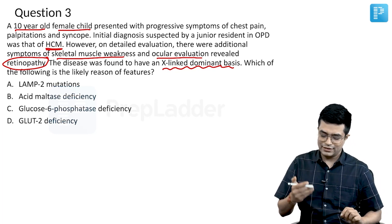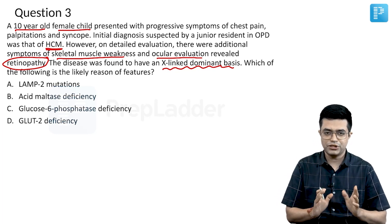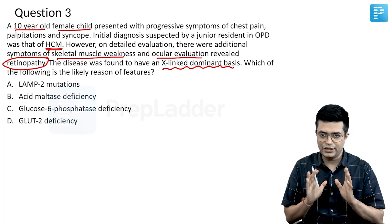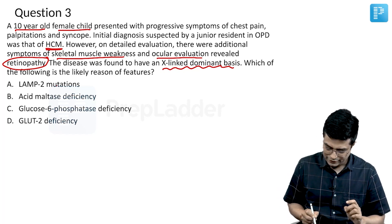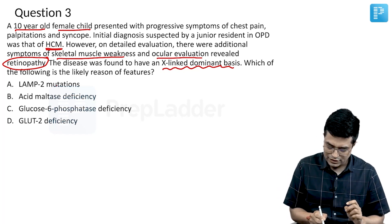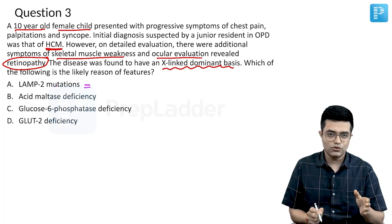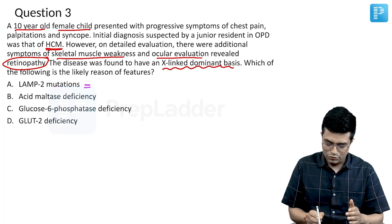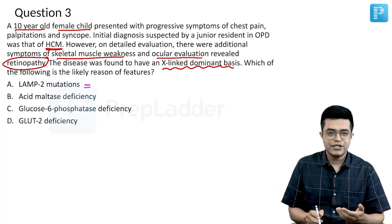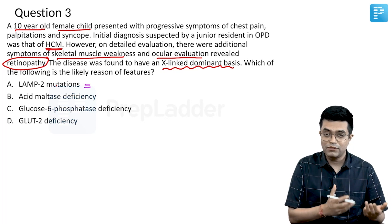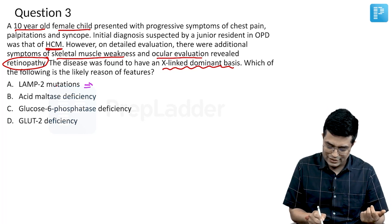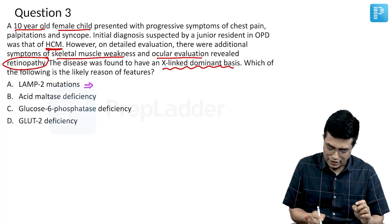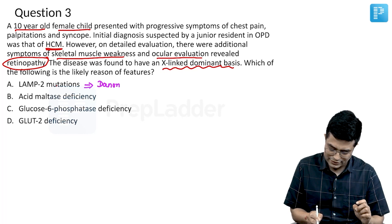What are these diseases? First, have a look at the options, then we will look at the keywords. Option A is LAMP2 mutation. LAMP2 is a lysosomal protein involved in glycogen metabolism, and abnormalities related to LAMP2 mutation produce a disease called Danon disease.